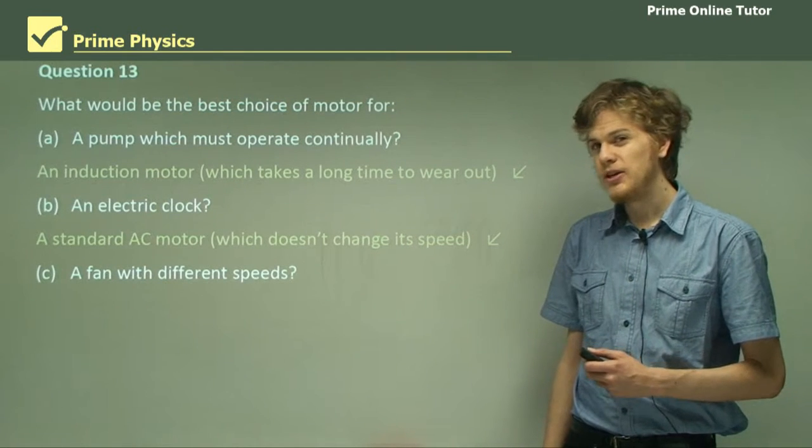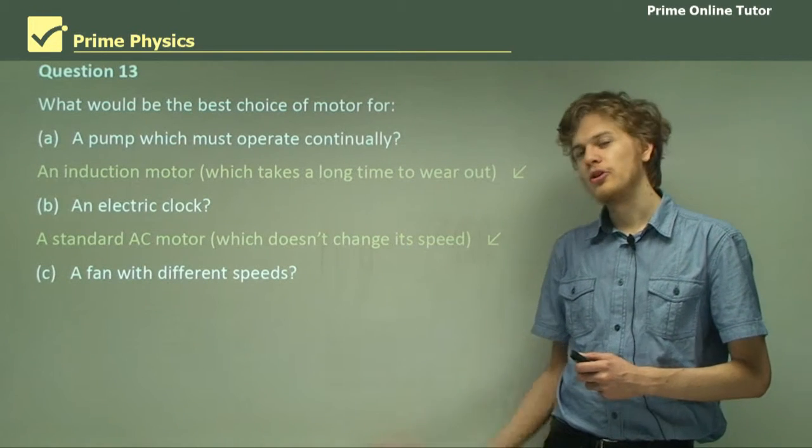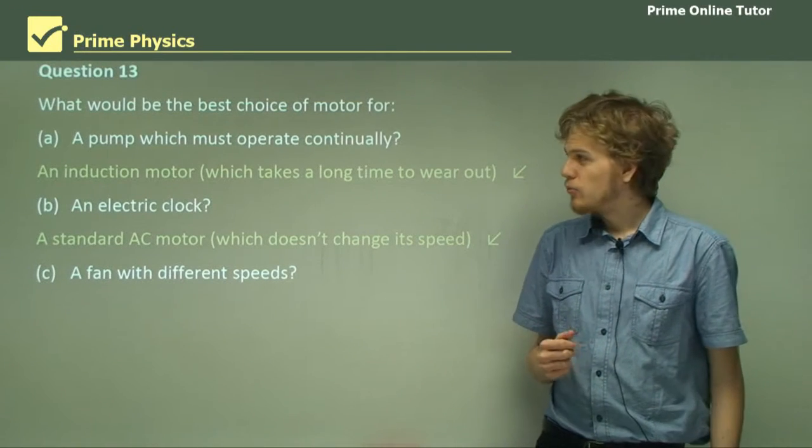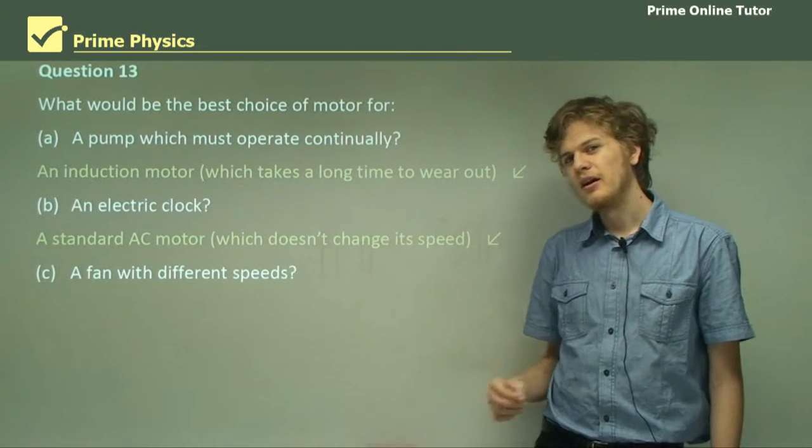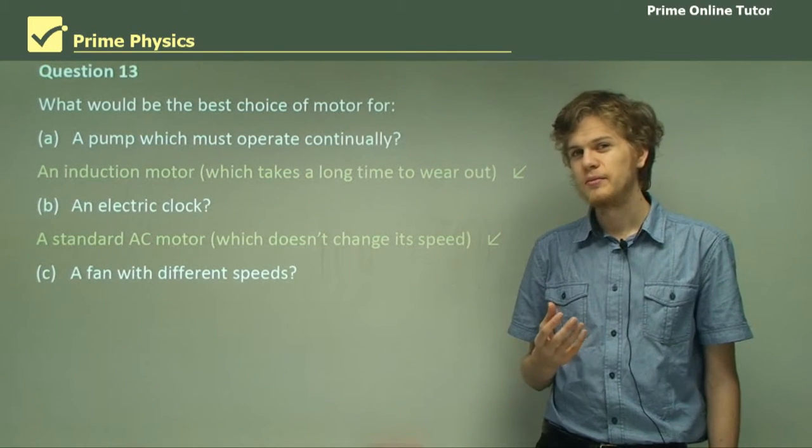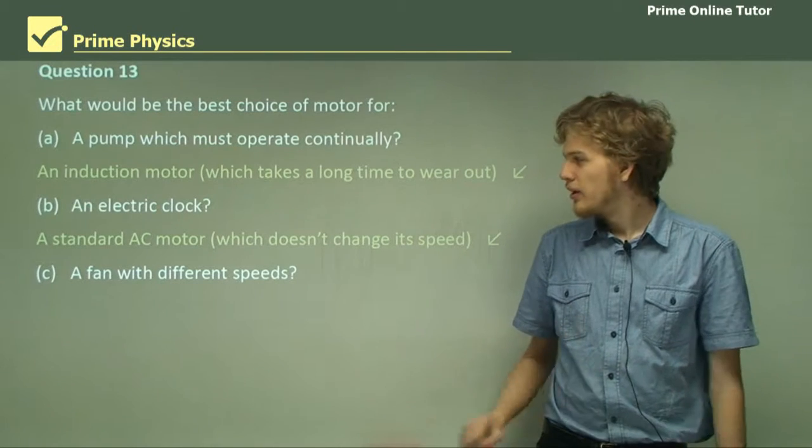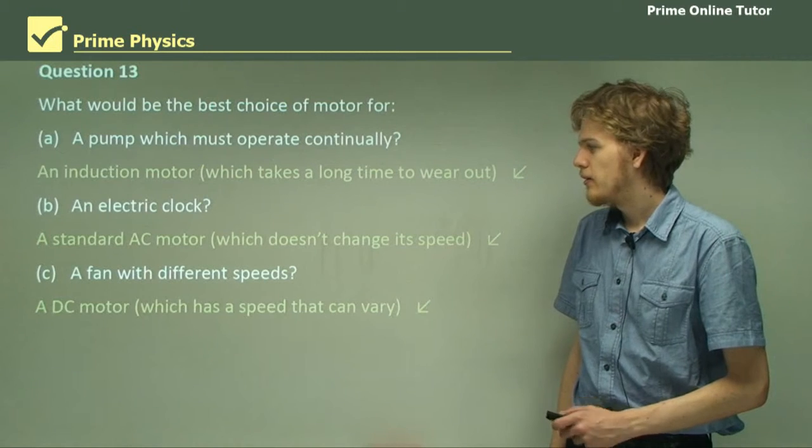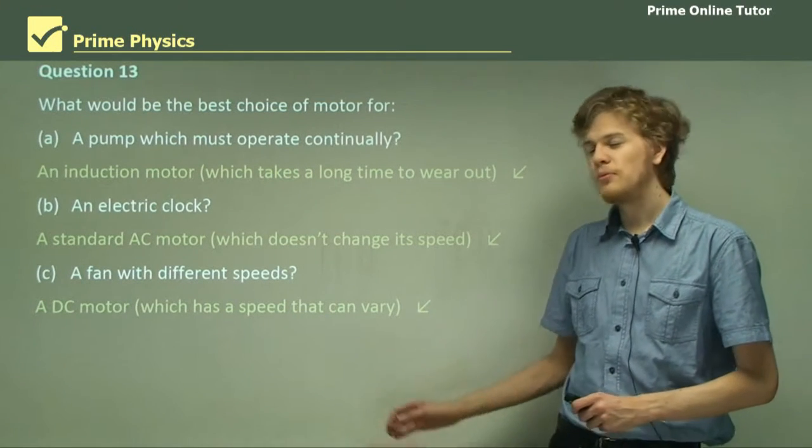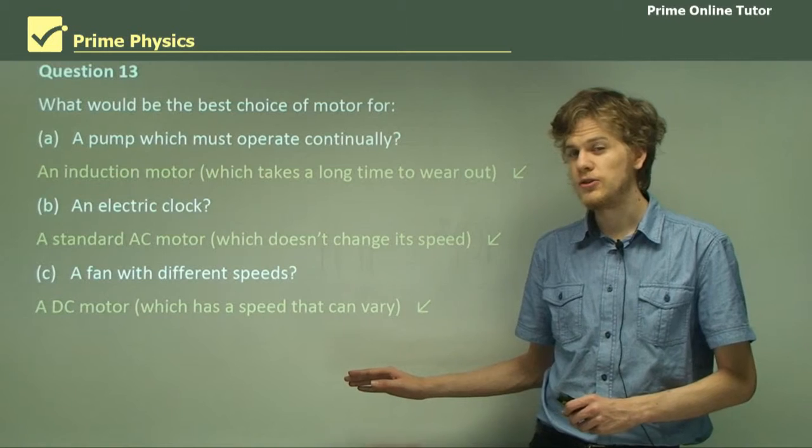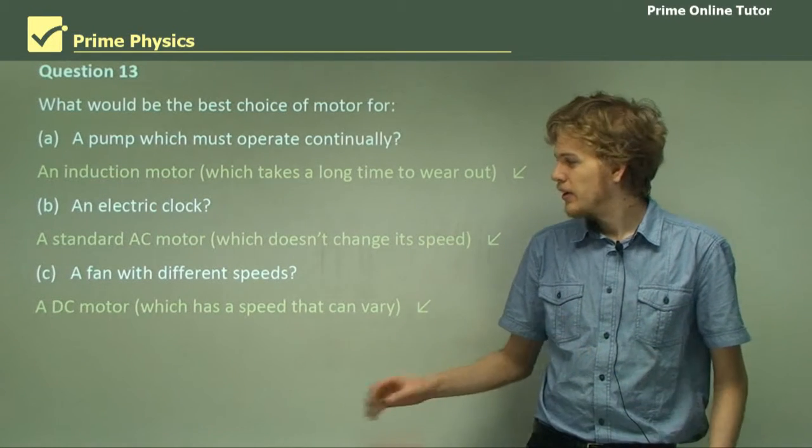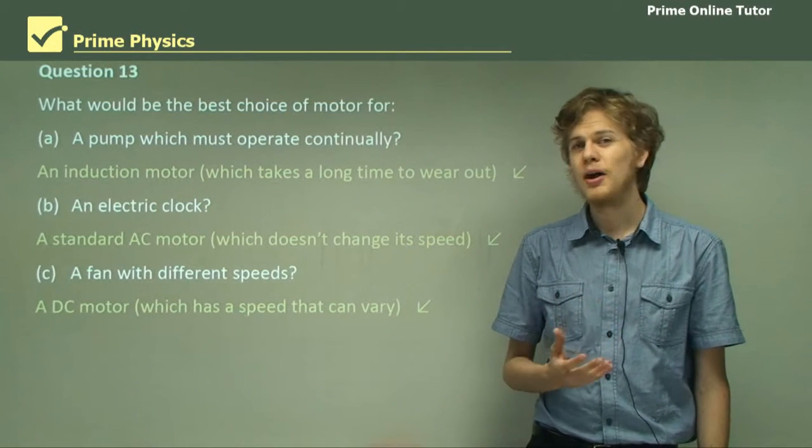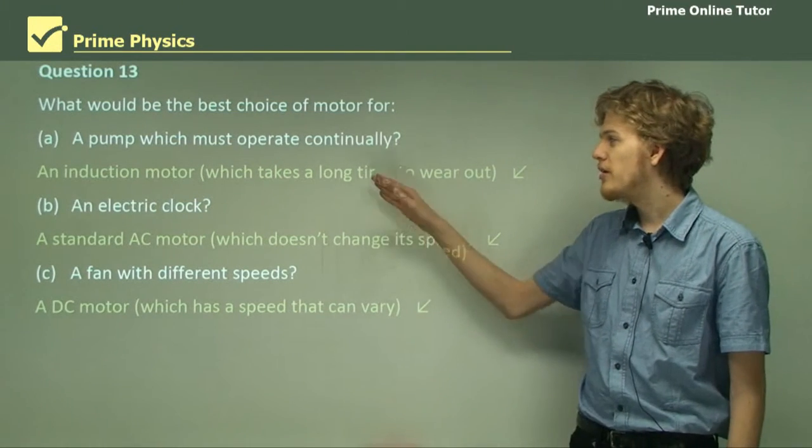How about a fan with different speeds? So we need to be able to run a motor at a slow speed or a fast speed. Well, an induction motor and an AC motor aren't really much good in this case, because they will always try and spin at the same rate. If we want to have a fan with different speeds, then what we should do is use a DC motor, because by supplying different currents to a DC motor, we can have it spin at different speeds. The rate at which a DC motor spins is not dependent on the frequency of the power source, in the same way that the other two ones are.